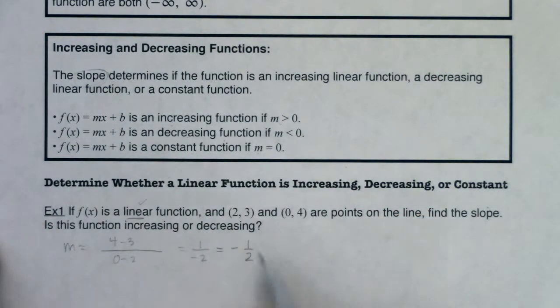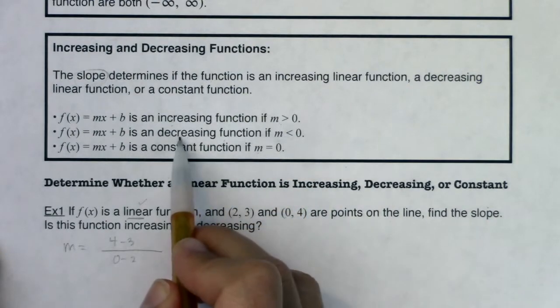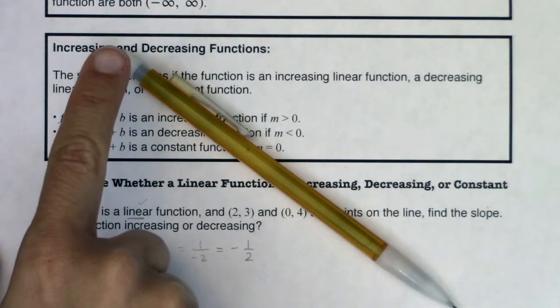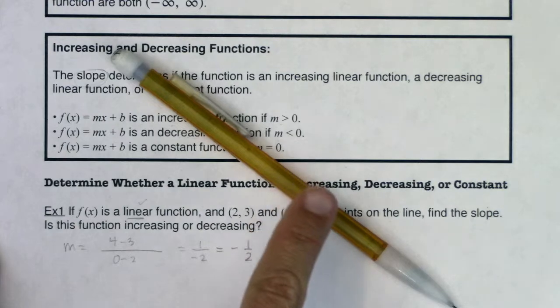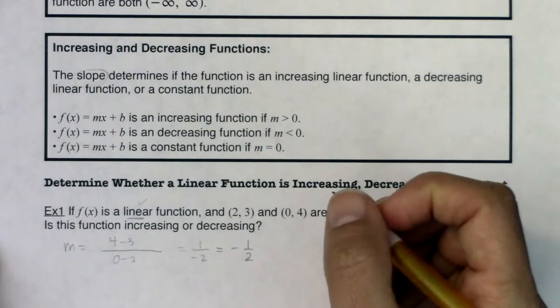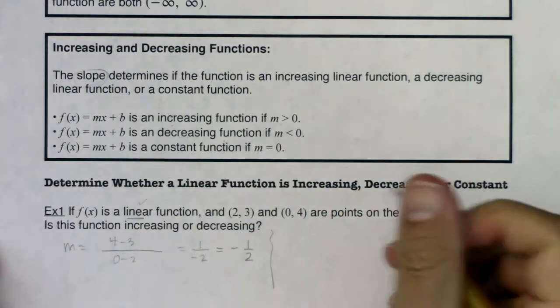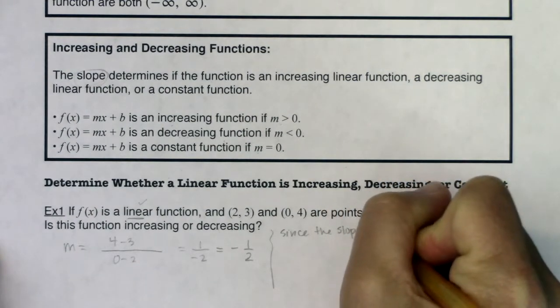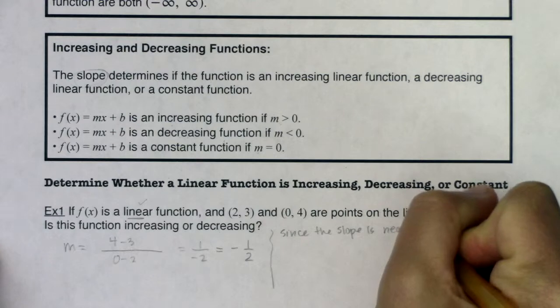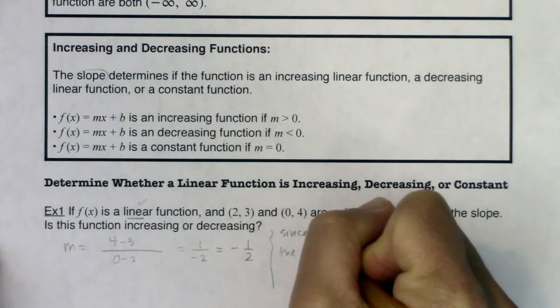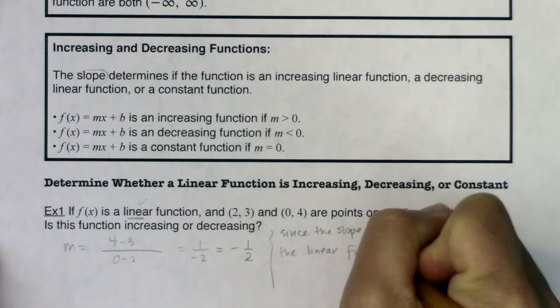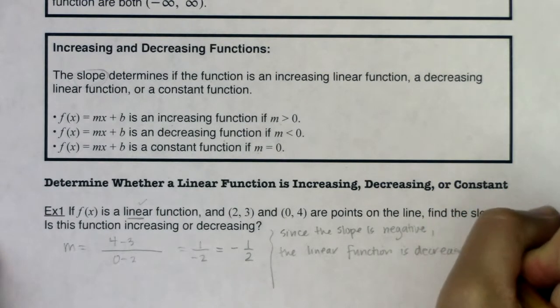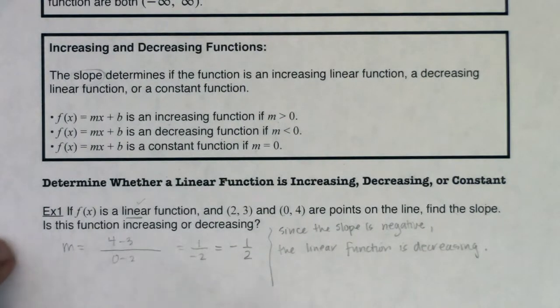Now is the function increasing or decreasing? Well, my slope is negative. So that would mean my function was decreasing. And if you were to graph that line, slopes of negative 1 half, they look something like this. So as I move left to right, you see my y values would be getting smaller and smaller and smaller. So we would say that this linear function is decreasing. Since the slope is negative, the linear function is decreasing.